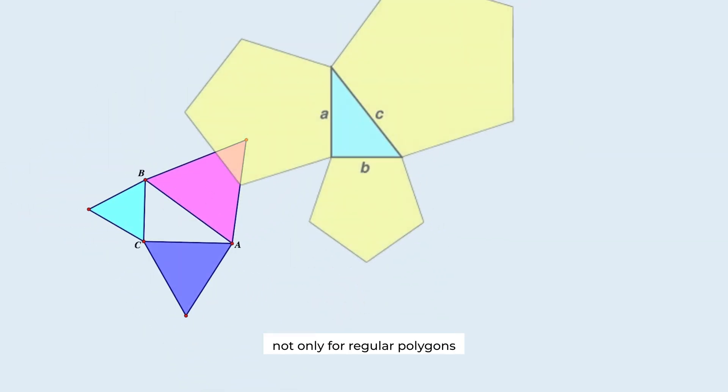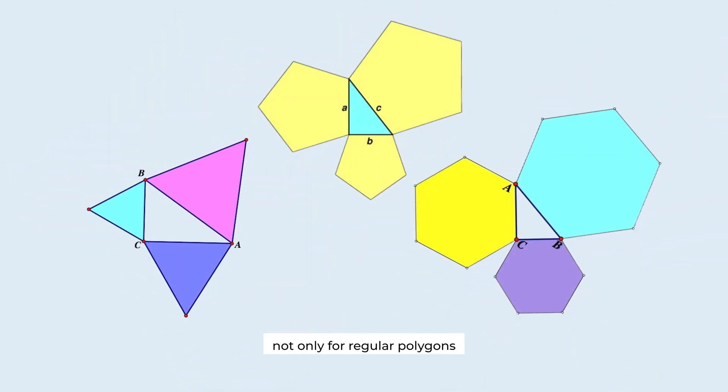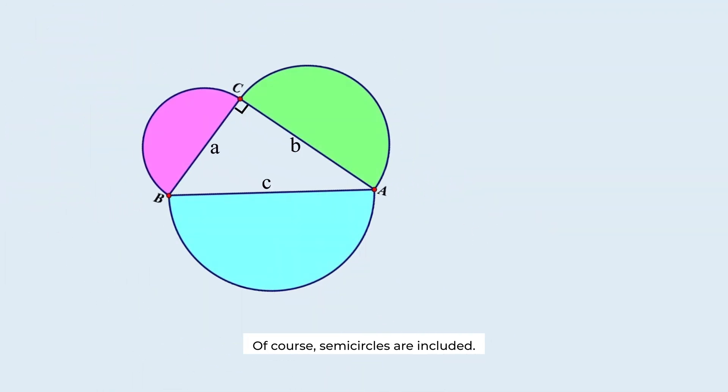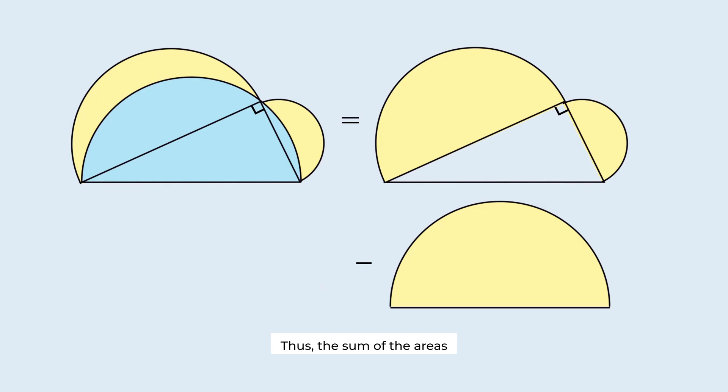It holds true not only for regular polygons, but for any similar shape. Of course, semicircles are included. Thus, the sum of the areas of these two semicircles is equal to the area of this semicircle.